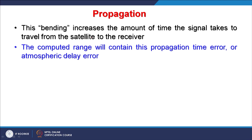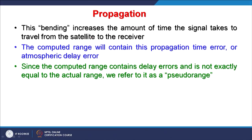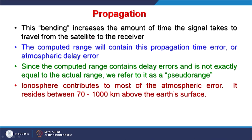This atmospheric total delay is difficult to identify in terms of its sources — whether it is because of ionospheric and tropospheric layers or because of extra path added by obstructions. Since the computed range contains delay errors and is not exactly equal to the true range, we refer to it instead as a pseudo-range.